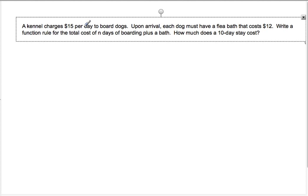Next one. A kennel charges $15 per day to board dogs. Upon arrival, each dog must have a flea bath that costs 12 bucks. Write a function rule for the total cost of N days of boarding plus a bath. Okay. So a variable would be T for total cost or C for cost. It already says N means days. So we don't need to say that again.